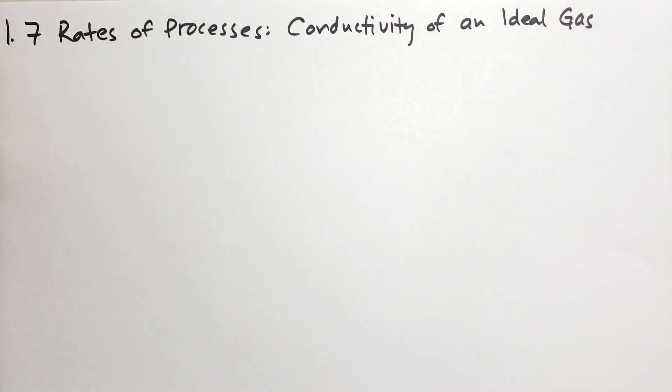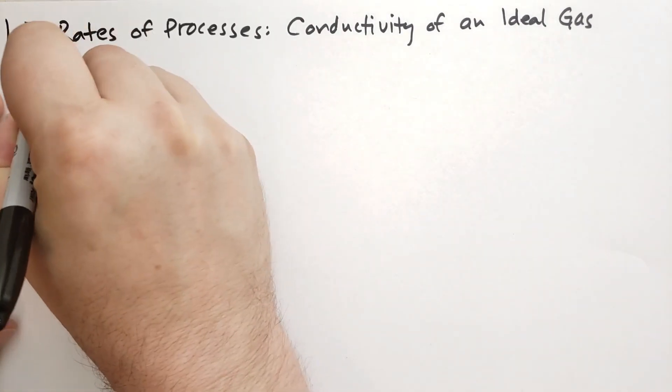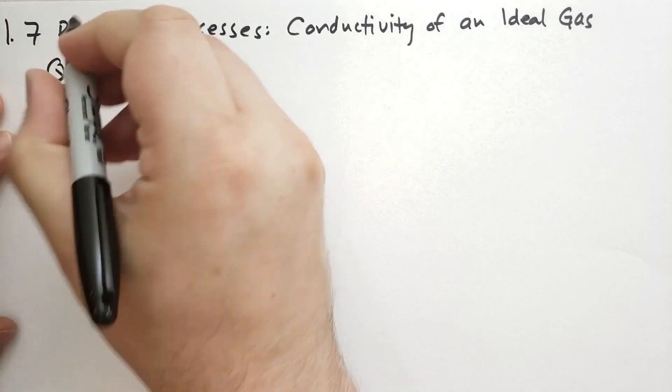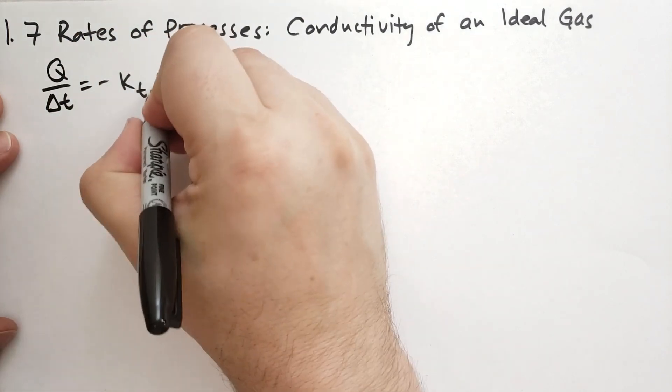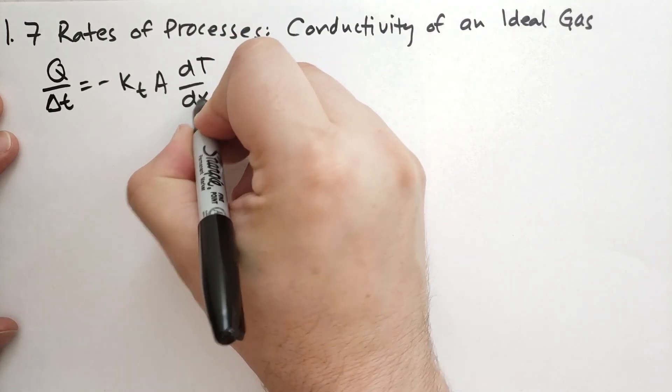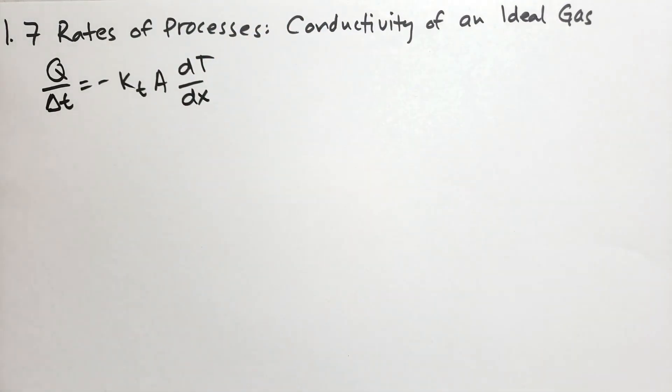Recall from the last section, that we have the Fourier heat conduction law, which is that the heat transferred per unit time is equal to minus kT, the area, and the temperature gradient. Okay. And this will give us the heat conduction flowing through like a pane of glass from one side to the other, where there is a temperature gradient through the material in the x direction, but the y and z directions are all constant.